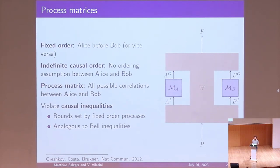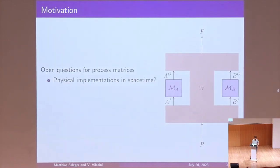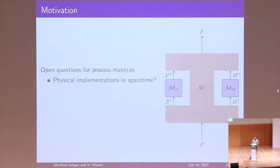This is interesting because violating Bell inequalities is interesting, so maybe you can get some quantum advantage if you can actually realize these process matrices. This leads to the open questions we try to tackle. It's not really clear if all process matrices are physical — there are really no physical assumptions put into the framework. It's just: let's drop the assumption of causal ordering and take everything that doesn't look completely unreasonable. So we wanted to answer: can we implement these process matrices, in particular in some kind of classical background spacetime, without appealing to quantum gravity?